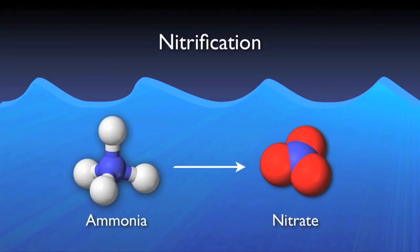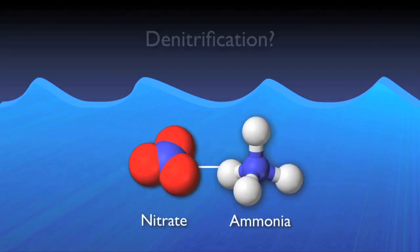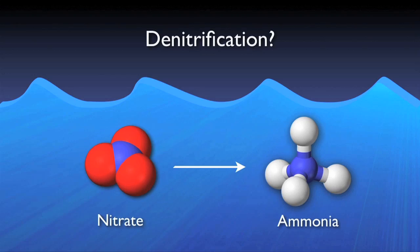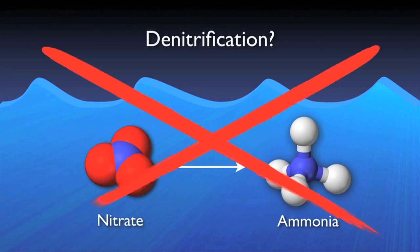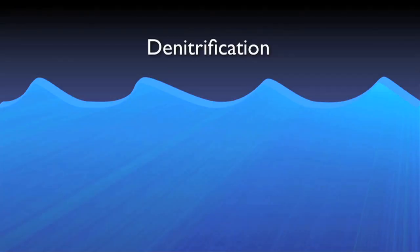The final step in completely removing nitrogen from the system is called denitrification. Since nitrification is converting ammonia to nitrate, one could think that denitrification is simply the reversal of this process. Confusingly, yet fortunately, this is not the case. Denitrification is performed by a specialized heterotrophic bacteria.